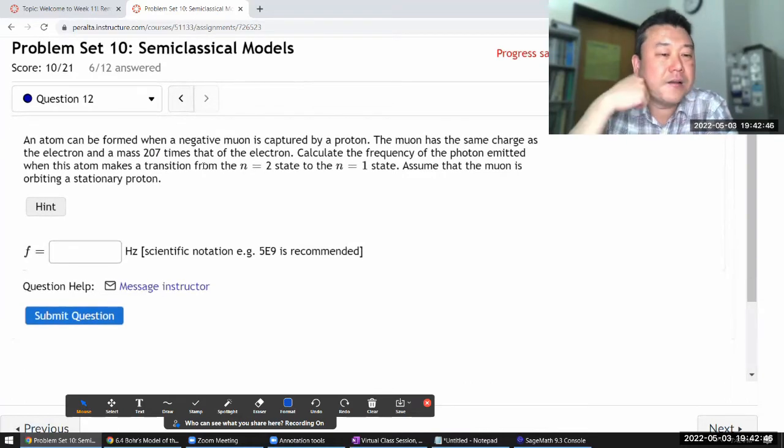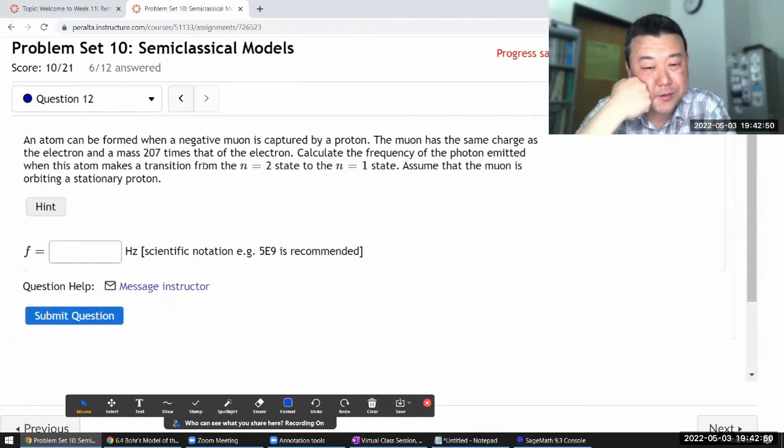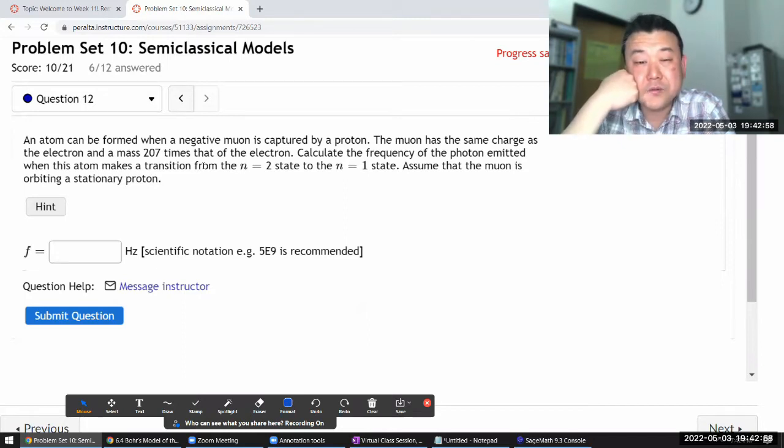An atom can be formed when a negative muon is captured by a proton. The muon has the same charge as the electron and has a mass that's 200 times larger. Calculate the frequency of the photon.